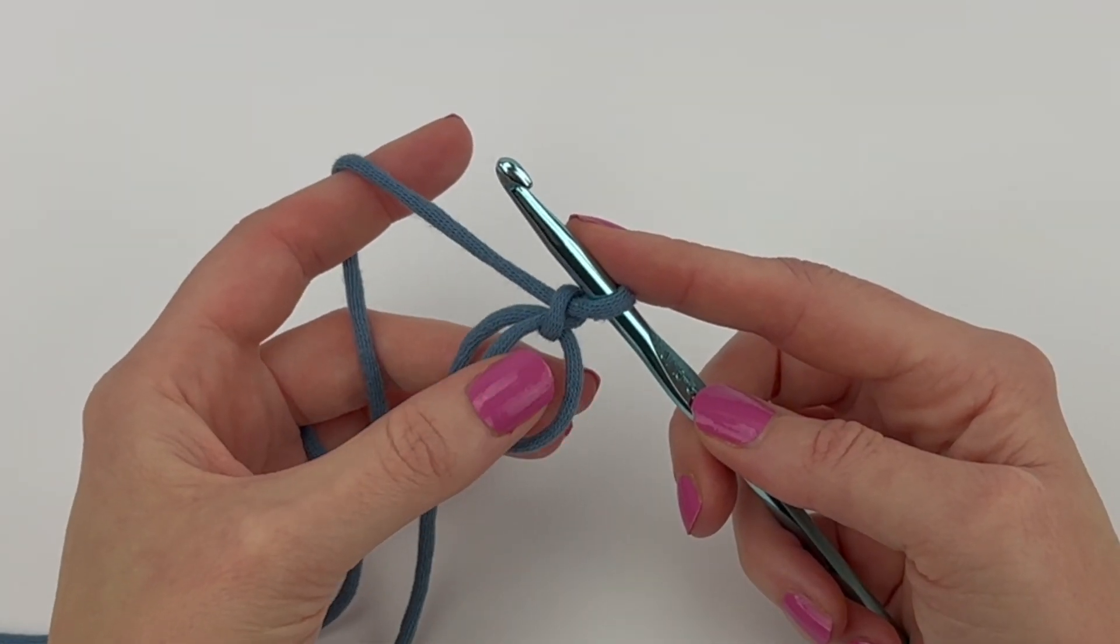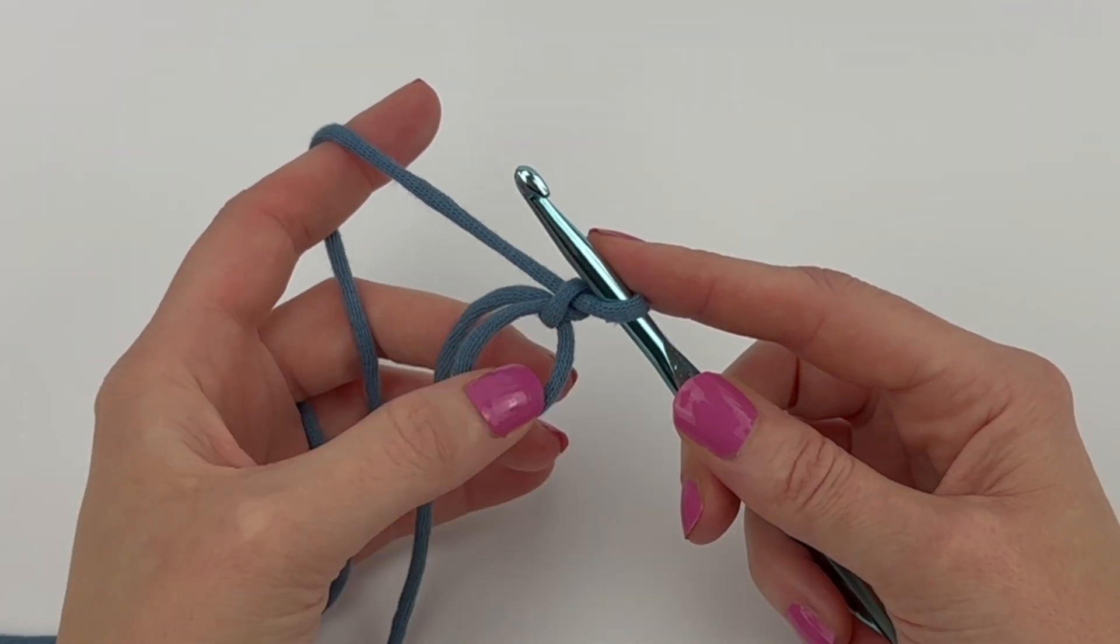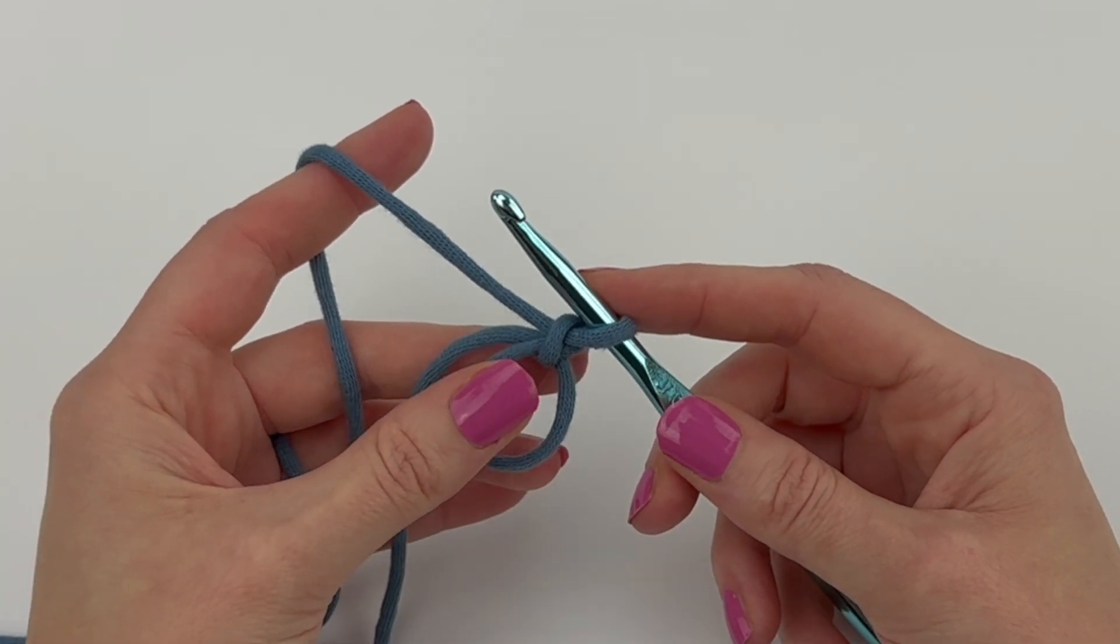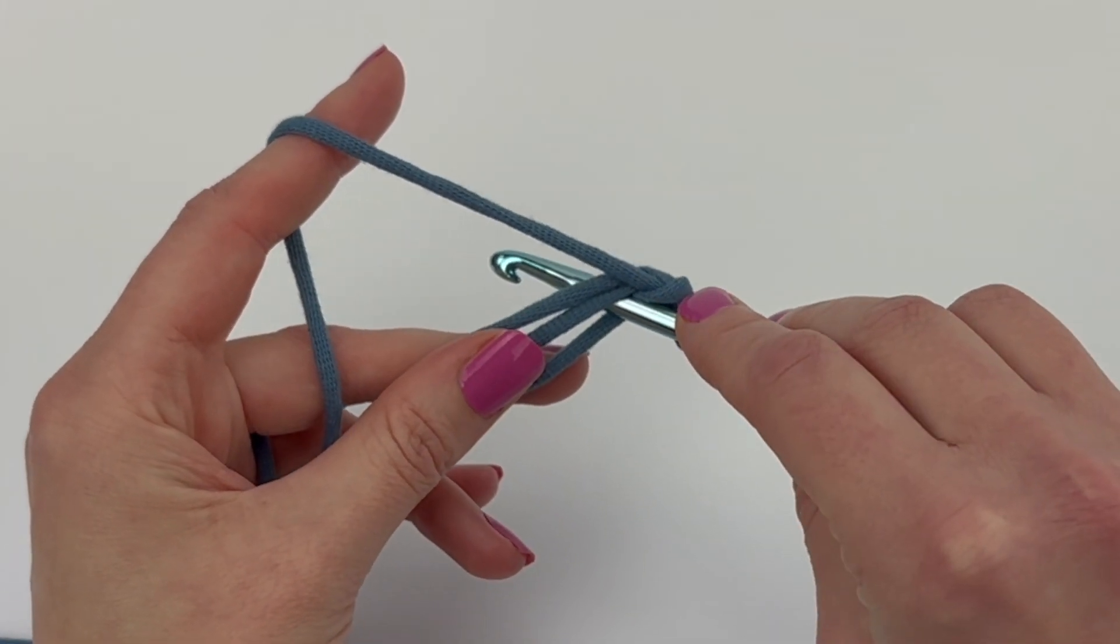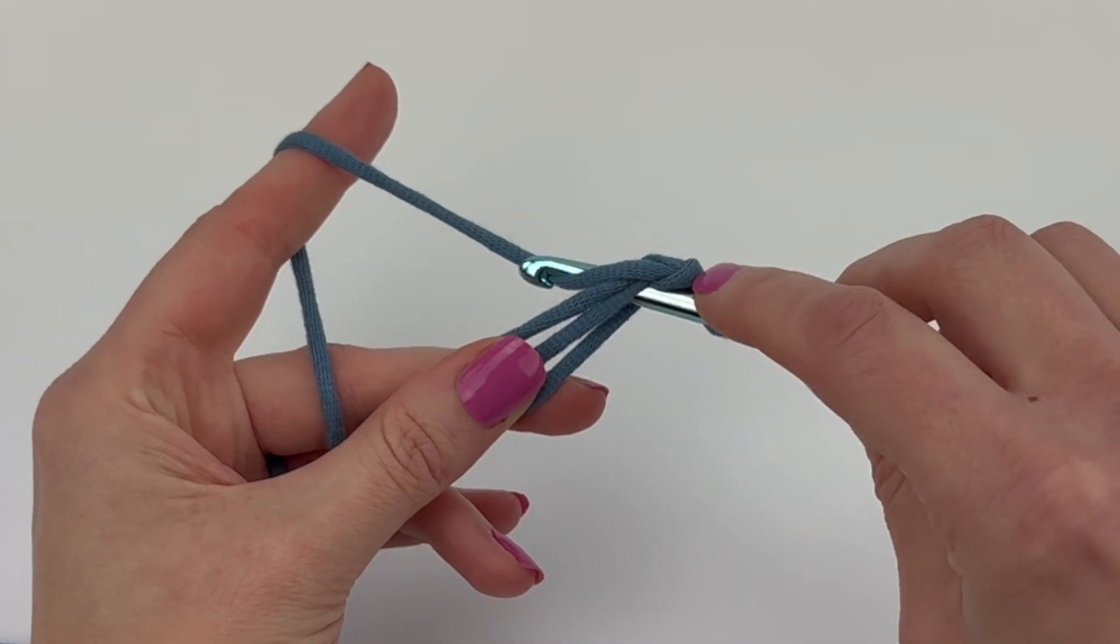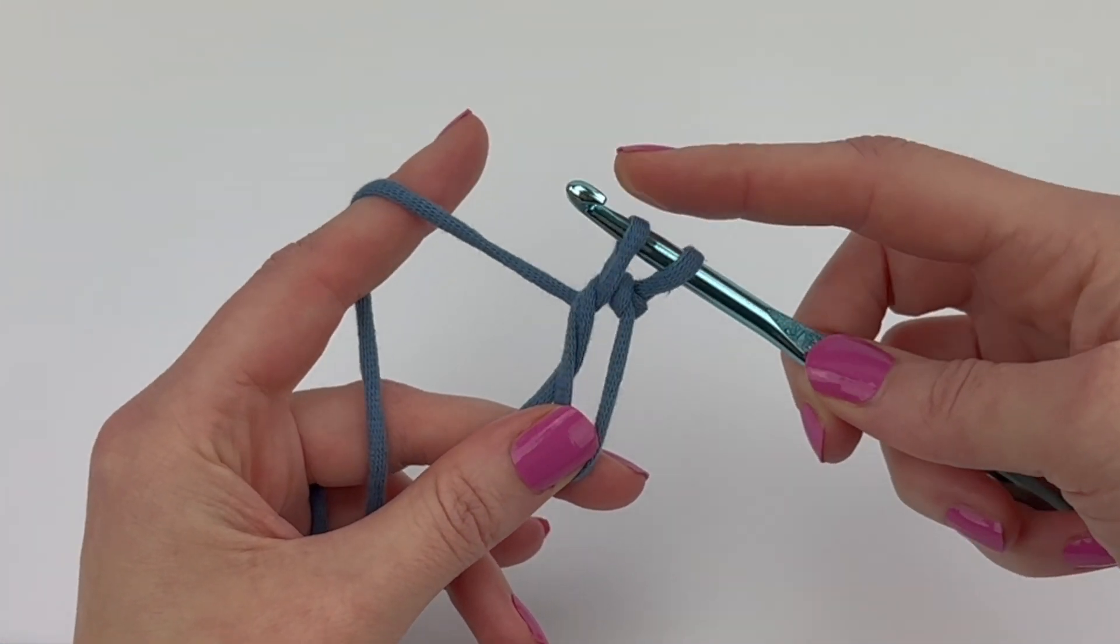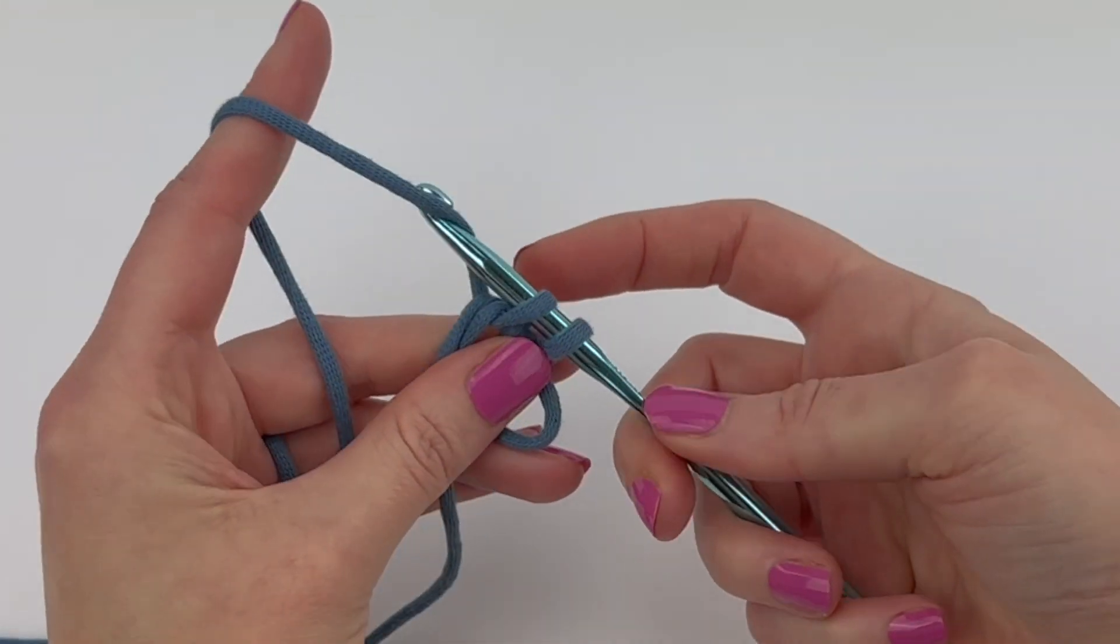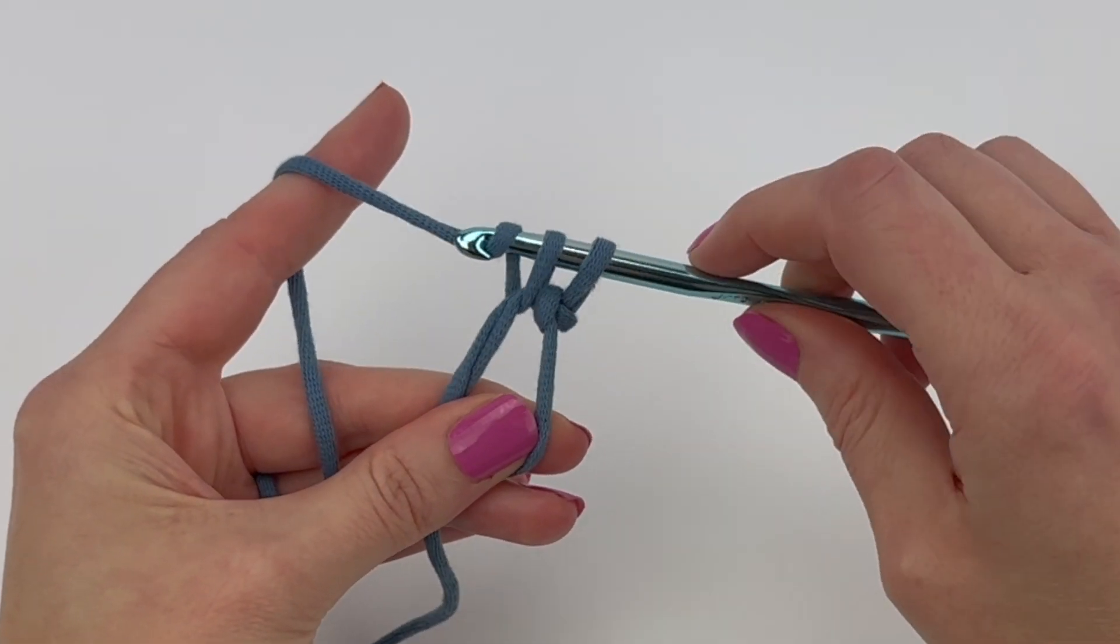Now you can work directly into the magic circle. For example, if you're going to make a single crochet stitch you just put your hook right into the magic circle, yarn over, pull up a loop, two loops on your hook, yarn over and pull the yarn through those two loops.